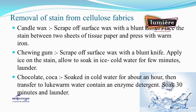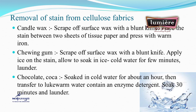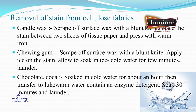For candle wax: scrape off the surface wax with a blunt knife, then place the stain between two sheets of tissue paper and press with a warm iron. For chewing gum: scrape off the surface gum with a blunt knife, then apply ice on the stain, allow to soak in ice-cold water for a few minutes, then launder.